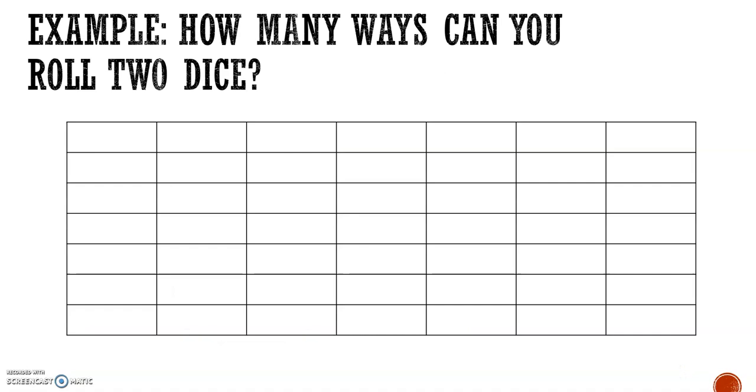Example: how many ways can you roll two dice? Across the top, we'll say this is dice number one. Down the side, we've got dice number two. On dice number one, we could roll a one, two, three, four, five, or six. Dice number two, we could roll a one, two, three, four, five, or six.